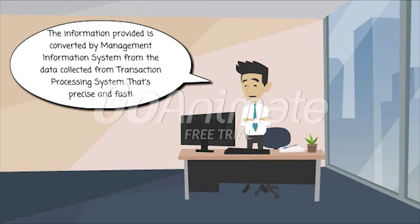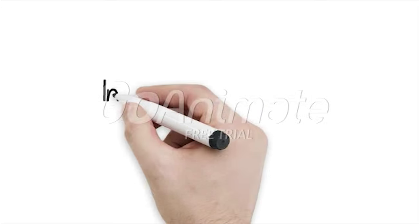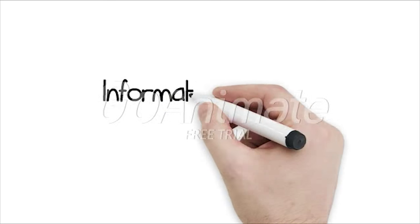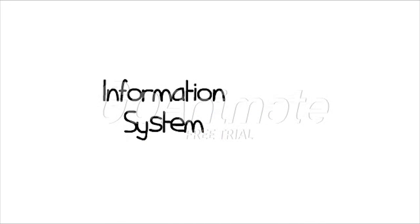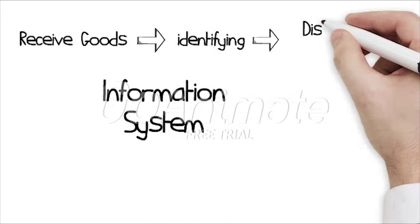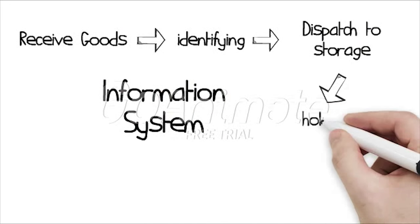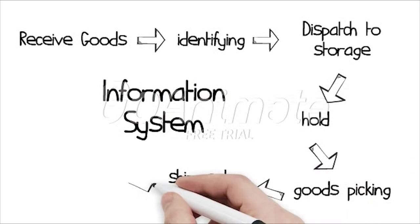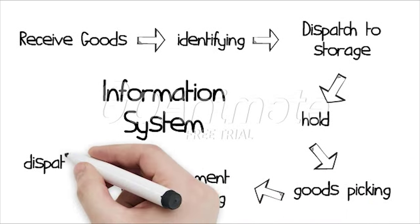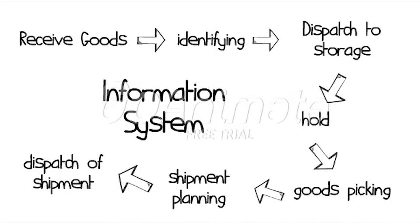The information provided is converted by the management information system from data collected from the transaction processing system — precise and fast. In summary, this system makes logistics movement easy to observe, covering the process from goods receiving, identifying, dispatch, hold, picking, shipment planning, and dispatch of shipment.